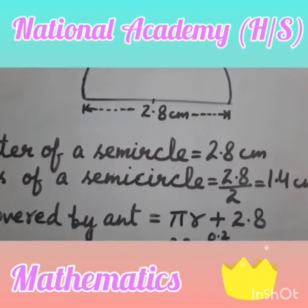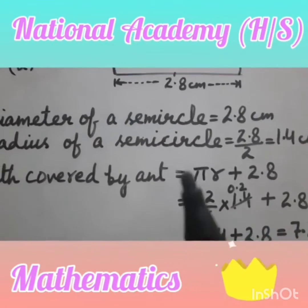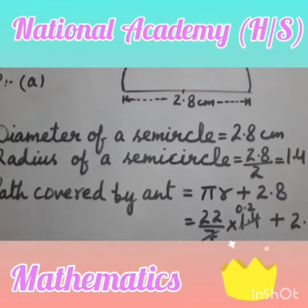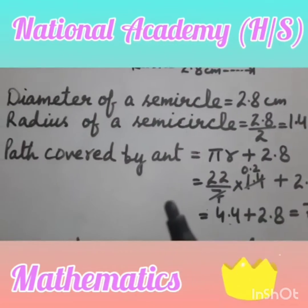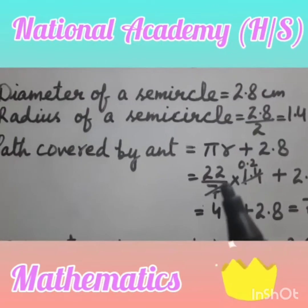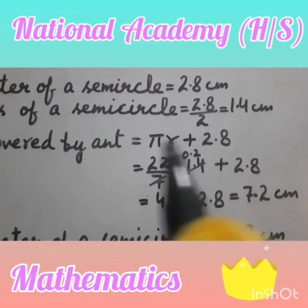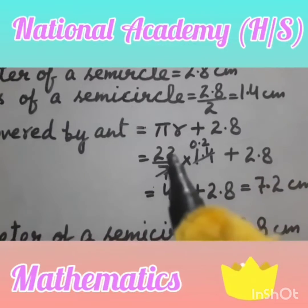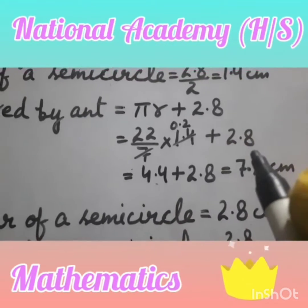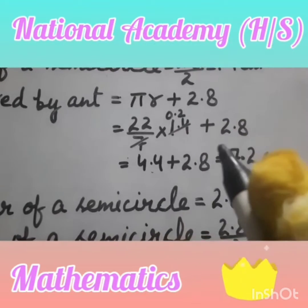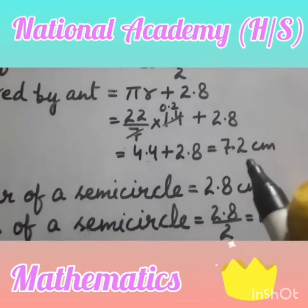So the radius is 2.8 ÷ 2 = 1.4 cm. The path covered in the first piece: the circumference includes the 2.8 cm diameter line plus the semicircle circumference. The total distance covered in the first piece is 7.2 cm.